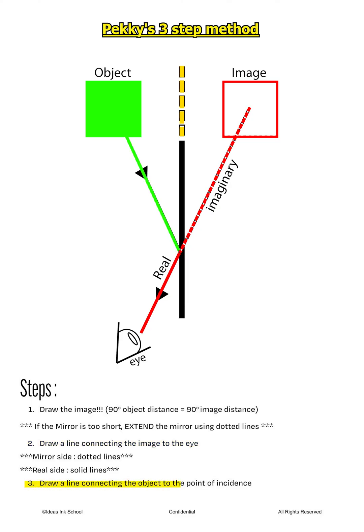Lastly, step three, we will connect the solid line from the object to the point of incidence. This line shows the actual light ray that originated from the object. In the next part of the chapter, we will discuss the applications of plane mirrors.